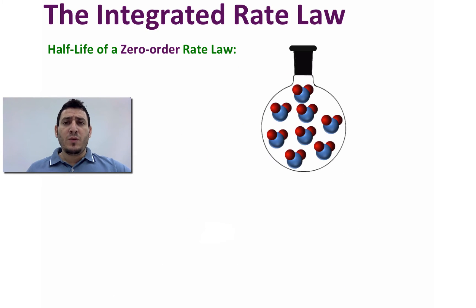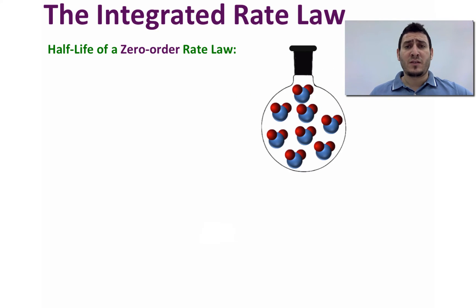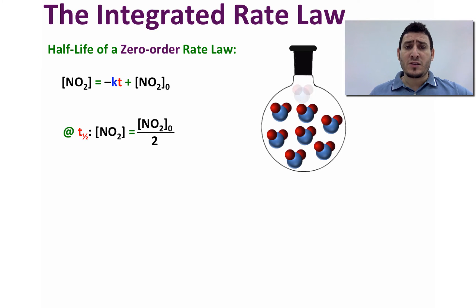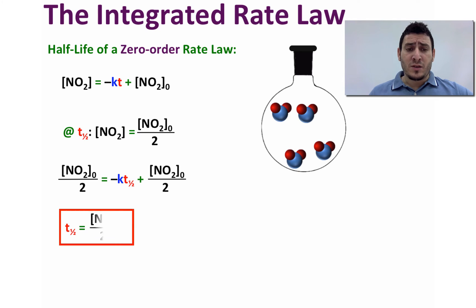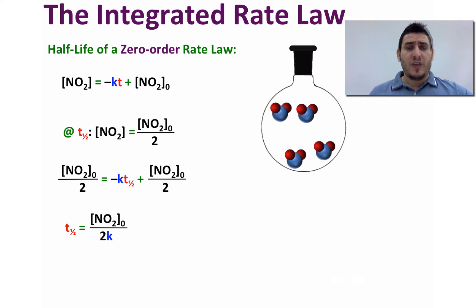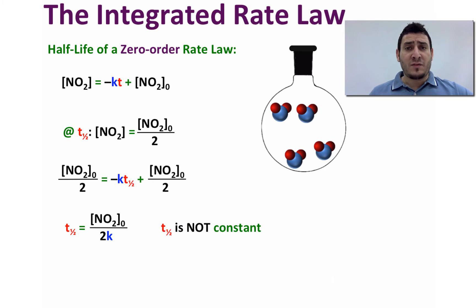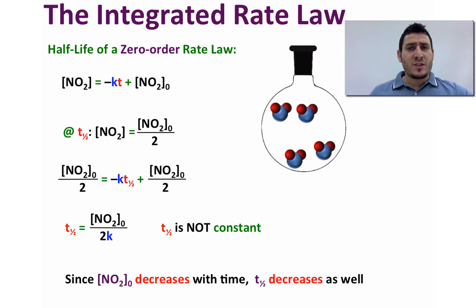Now we will define what is called the half-life. The half-life is how much time it takes for the reaction to consume half of its initial concentration. So at the half-life, [NO₂] = [NO₂]₀ / 2. Substituting and rearranging, we get that the half-life equals [NO₂]₀ / 2k. This means the half-life depends on the initial concentration, and therefore is not constant — since the initial concentration decreases with time, the half-life will decrease with time.